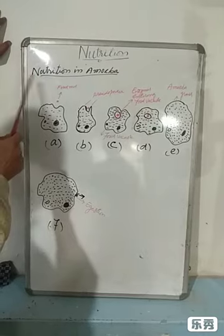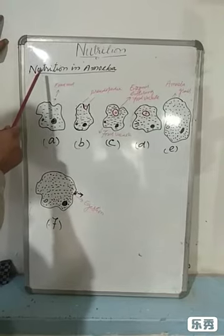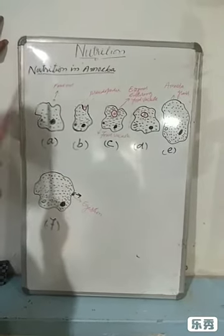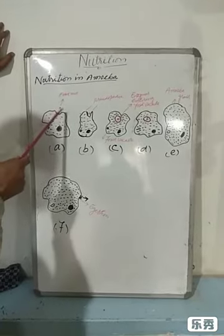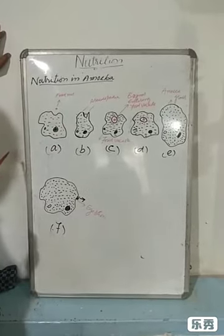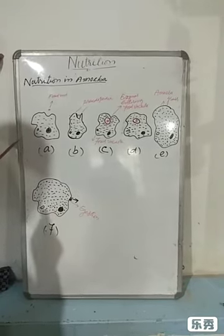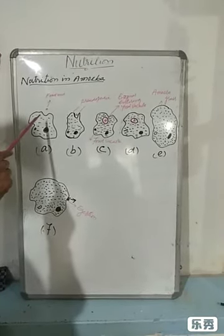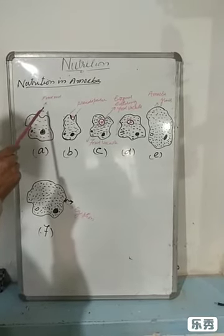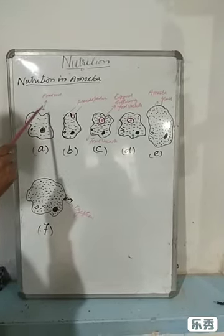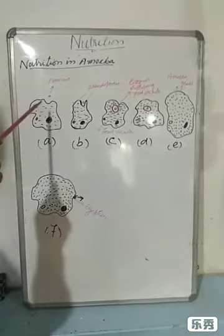Now we will discuss nutrition in amoeba — how amoeba takes nutrients. Amoeba is a unicellular organism. It lives in water. Its mode of nutrition is holozoic, and it eats unicellular organisms, whether plant or animal, which are found in its surroundings.